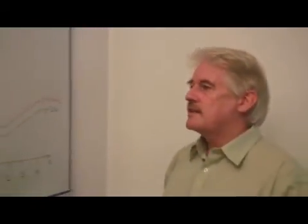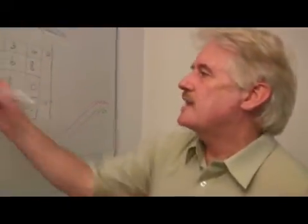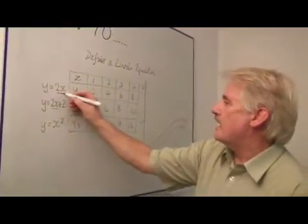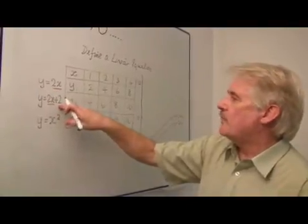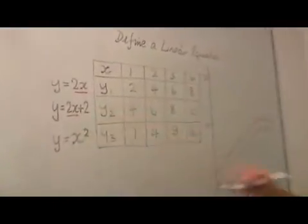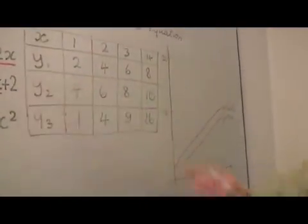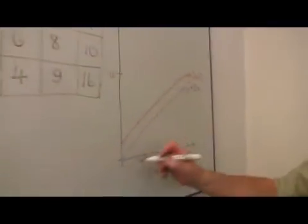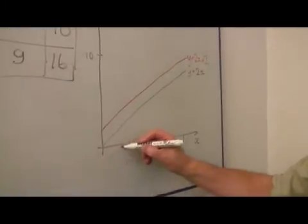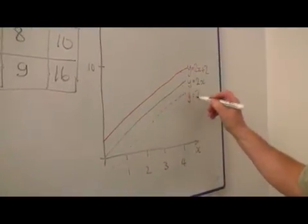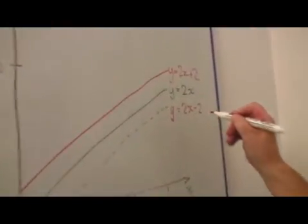You'll also notice that in both of these cases, x is just a plain simple x. Although there's a number here as well, all the number does is to push the graph up a little bit. Or if it was negative, it would push it down a little bit. So you could have 2x minus 2, which would be down here. And so on.